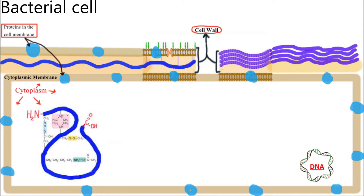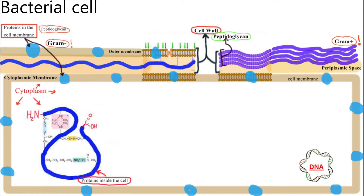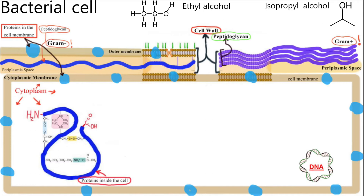The cell wall of gram-positive bacteria consists of thick peptidoglycan and periplasmic space, followed by the cytoplasmic membrane. The cell wall of gram-negative bacteria consists of outer membrane, a thin peptidoglycan layer which is penetrated easier by the alcohol, periplasmic space, and then cytoplasmic membrane. In the healthcare setting, alcohol refers to two water-soluble chemical compounds: ethyl alcohol and isopropyl alcohol. Let's study the mechanism of action and indications of alcohol as antiseptic and disinfectant.